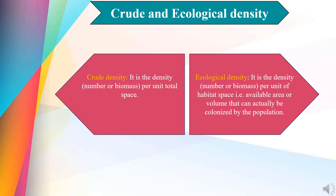Coming to crude density and ecological density — since the patterns of dispersion of organisms in nature are different, it becomes important to distinguish between the two. Crude density is the density per unit total space, and ecological density is the density per unit of habitat space that is available — the area or volume that can actually be colonized by the population. This distinction becomes important due to the fact that organisms in nature generally grow clumped in groups and are rarely uniformly distributed. A good example is provided by Kull's study of fish density.